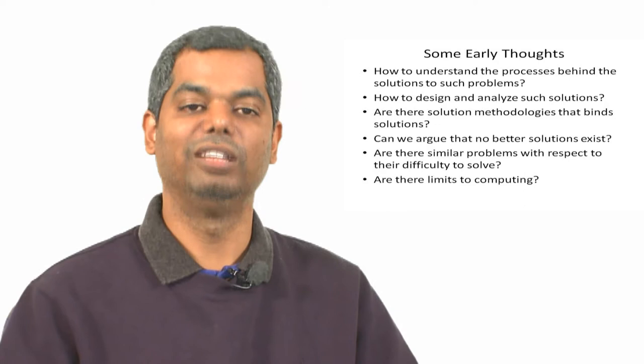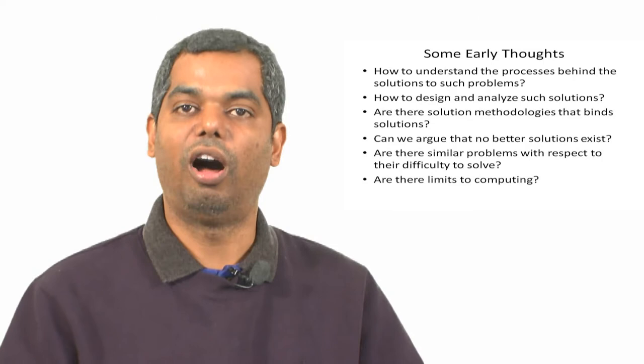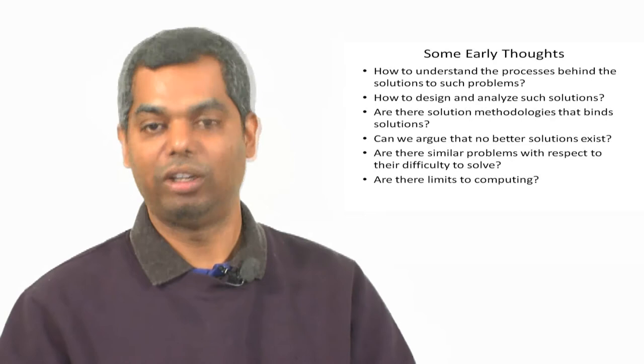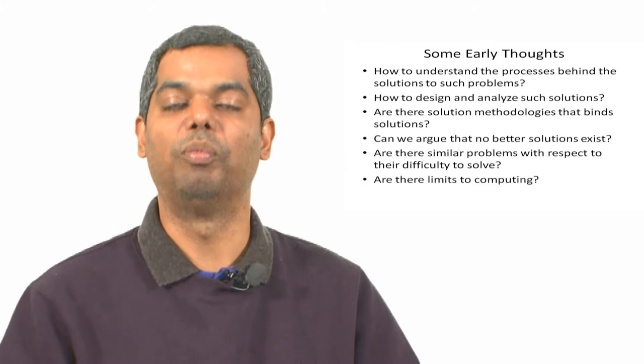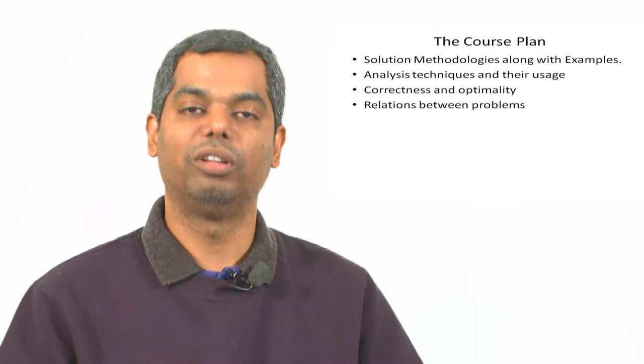Can we argue that no better solutions exist in any sense? In a similar spirit, we could also want to understand things like: are there similar problems with respect to the difficulty to solve? Are there problems that are of the same difficulty to solve or that are of different difficulty to solve? How do we argue and reason about these differences? Similarly, at a very abstract level, are there limits to what computers can do? For example, can they solve every problem that we face today, or are there natural limitations that stop them from solving problems that are possibly solvable by human brains but not by computers?